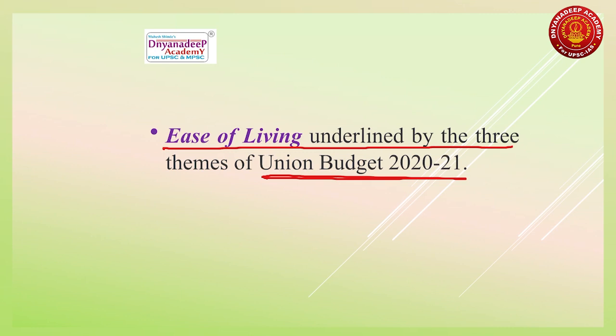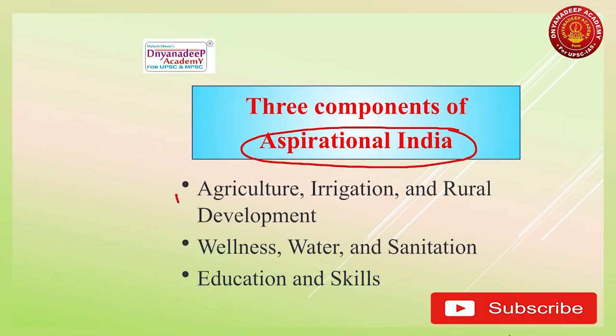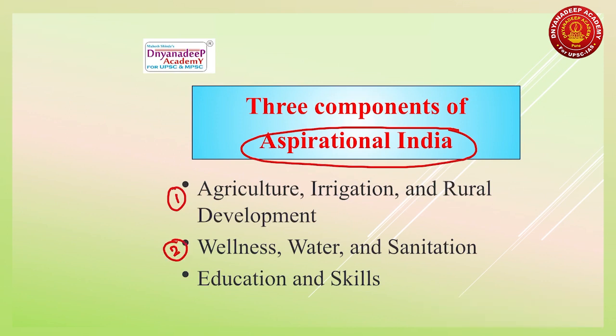Aspirational India has three important components: first, agriculture, irrigation and rural development; second, wellness, water and sanitation; and third, education and skills. These are the three important components of Aspirational India.